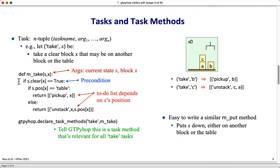This if test is the precondition. If it is satisfied, then this if test determines which of two different to-do lists get returned, one in the case where the block is on the table and the other if the block is on top of another block. Finally, this declaration tells gtpyhop that this is a task method and it's relevant for all tasks whose task name is take.